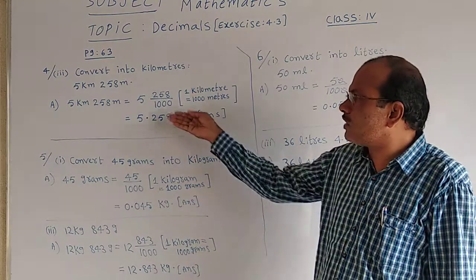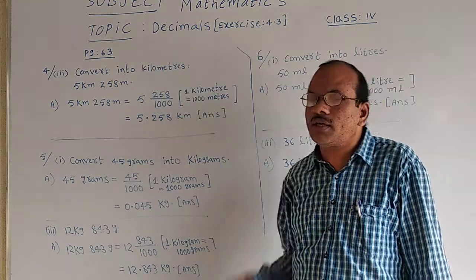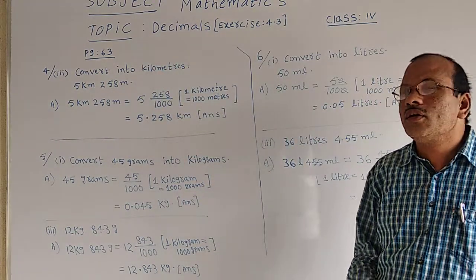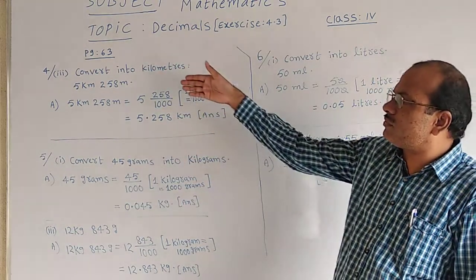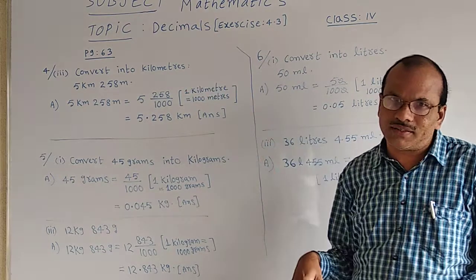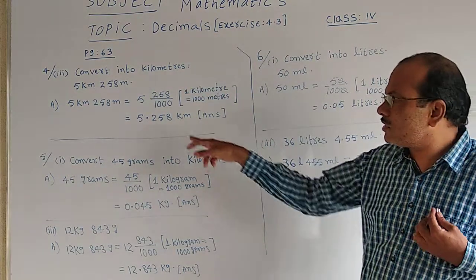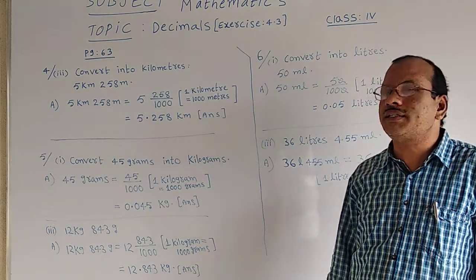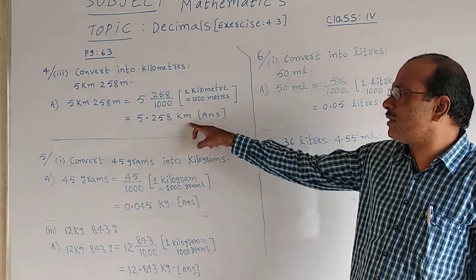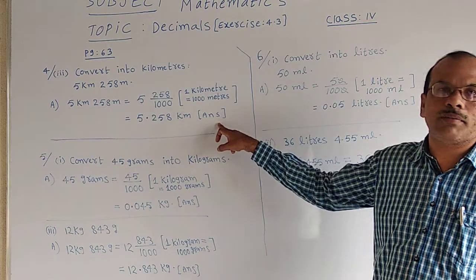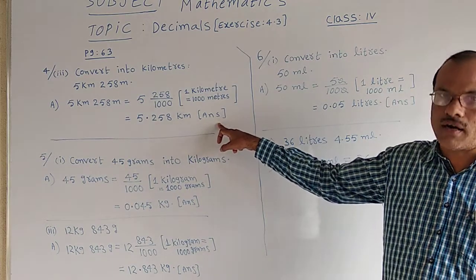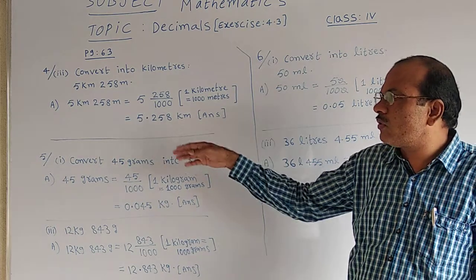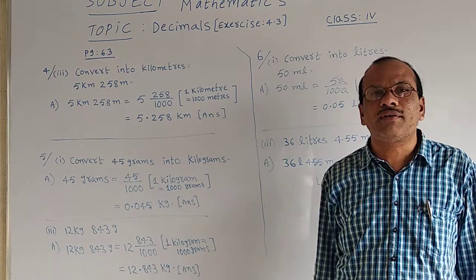This is equal to the given question: 5 kilometers 258 meters is equal to 5.258 kilometers. That is the answer for us. Then we will go to question 5.